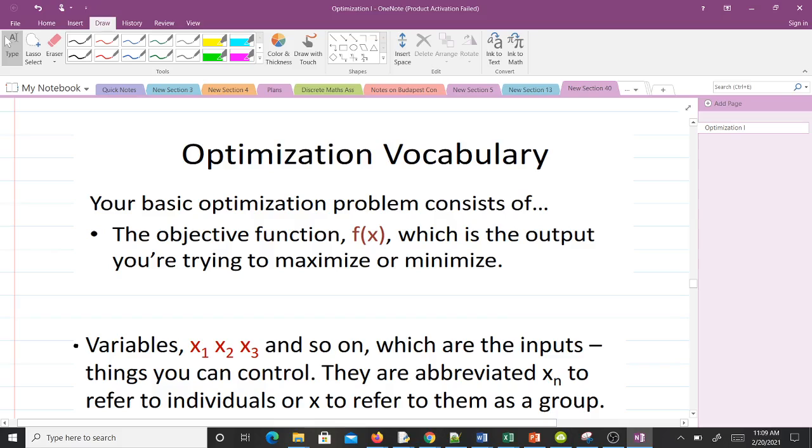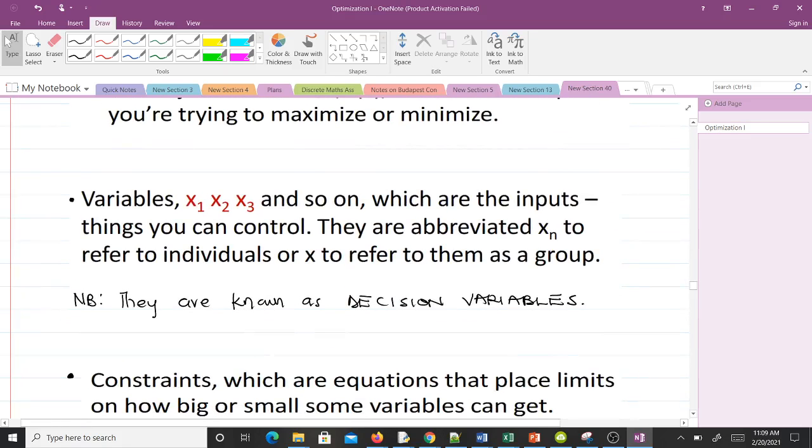That function has some variables in it like x1, x2, x3 and so on, or like x, y, z and the rest. These are the inputs and they are things you can control. They are abbreviated as xn to refer to individuals or x to refer to them as a group. We also call these the decision variables because you can control them.